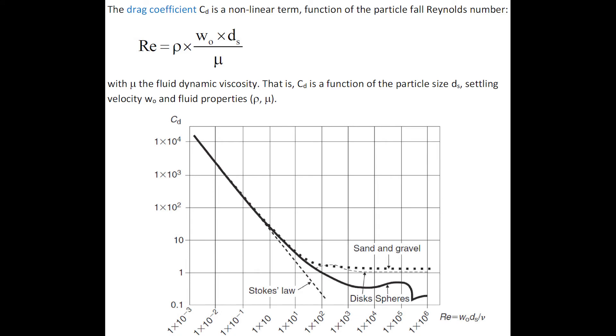In the settling velocity expression, the drag coefficient Cd is a non-linear term, a function of the particle Reynolds number, where μ is the fluid dynamic viscosity. The drag coefficient is a function of the particle size ds, settling velocity ws, and fluid properties ρ and μ.